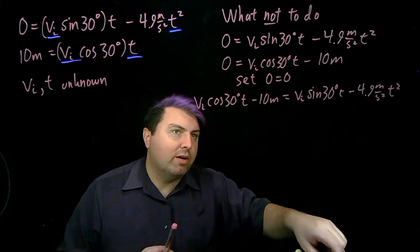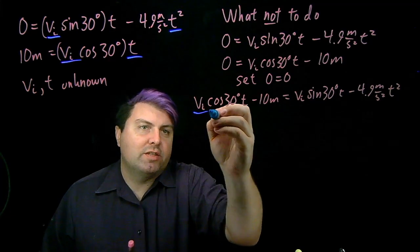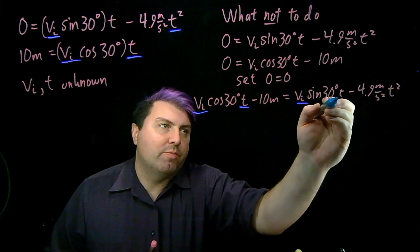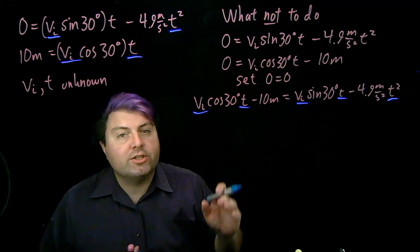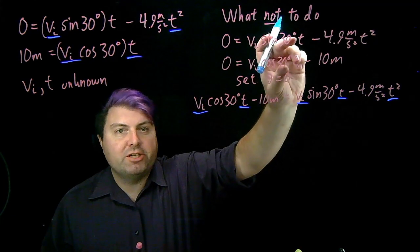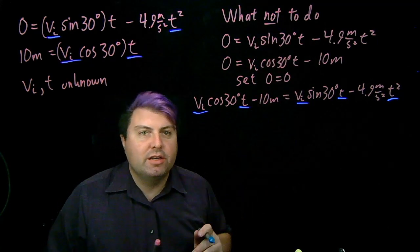Well, what's wrong with this? What's wrong with this is that our vi, our t, and our t² are all still in this equation, and we've reduced the total number of equations we have from two down to one.